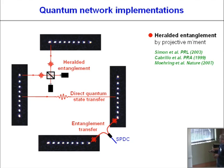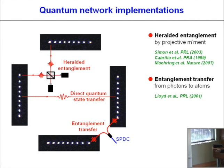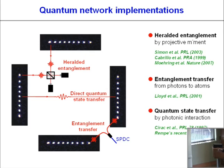There are other ways of connecting ion traps through photonic channels. For example, there was a proposal by Seth Lloyd and coworkers to transfer entanglement from photons to atoms, motivated by the fact that the most robust and cheapest entanglement available is photonic entanglement from spontaneous parametric down-conversion. If you split entangled photons and send them to two distant ions and absorb them, you transfer the entanglement to the ions. A third idea is to directly transfer a quantum state from one ion to another by emitting and absorbing a photon — where controlled absorption is an important point, which I will address today.